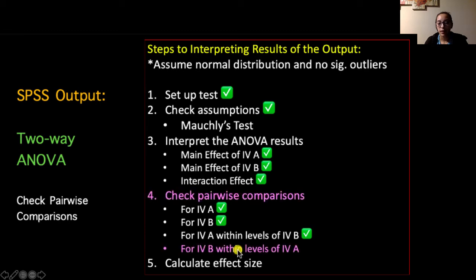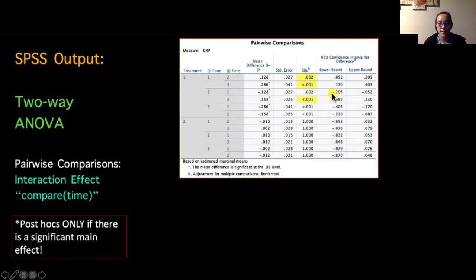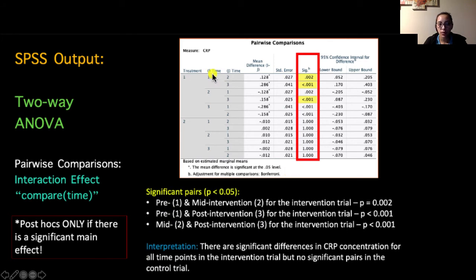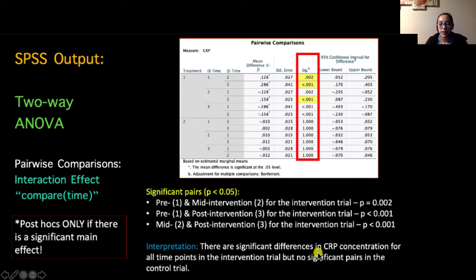The other set of interaction comparisons looks at time points within each treatment group. Three significant pairs are highlighted: pre vs. mid-intervention, pre vs. post-intervention, and mid vs. post-intervention — all within the intervention trial. No significant pairs were found within the control trial (labeled as 2). We interpret this as: there are significant differences in CRP concentration for all time points in the intervention trial, but no significant pairs in the control trial.